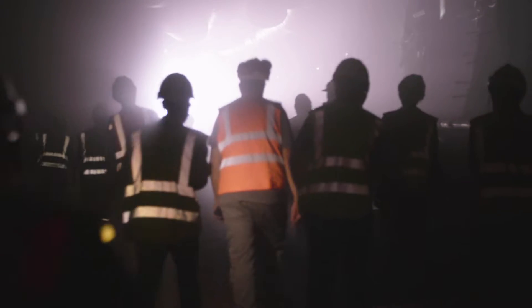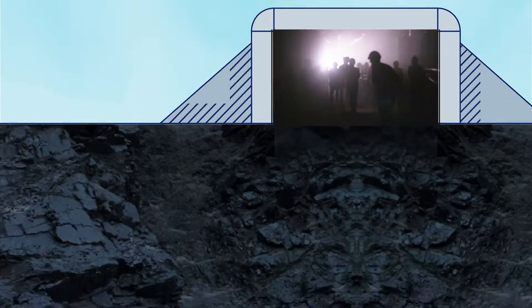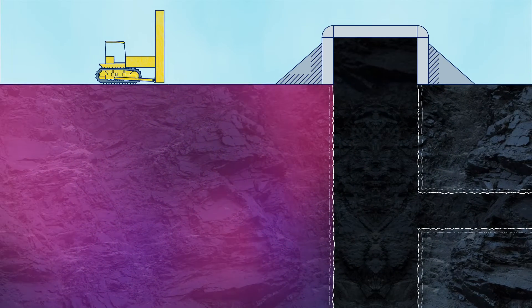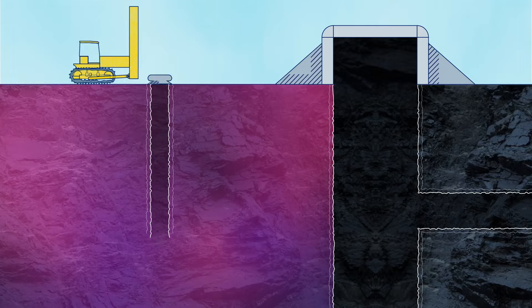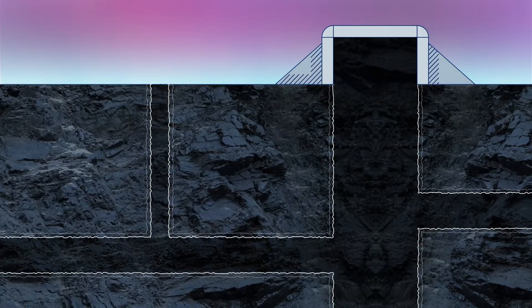Some mines are so gassy that ventilation systems alone cannot keep miners safe. In those situations, holes are bored into the coal and surrounding strata rocks to drain methane and transport it to the surface where it is often released into the atmosphere.